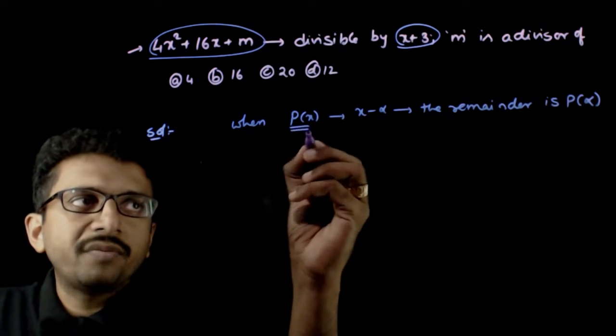This implies 4 times 9 is 36 minus 48 plus m equals zero, so m equals 12.